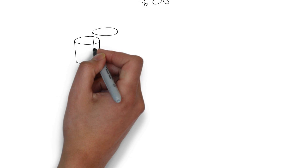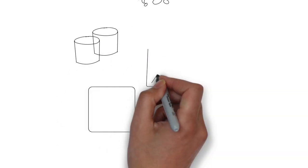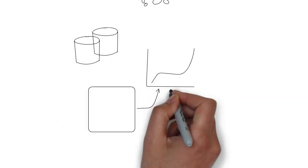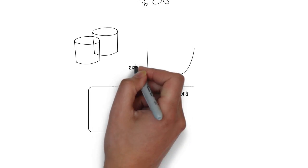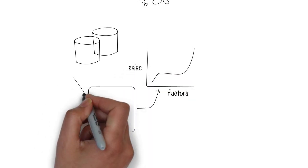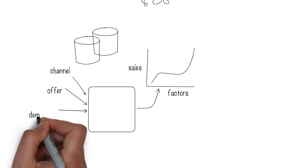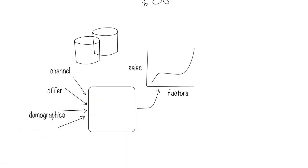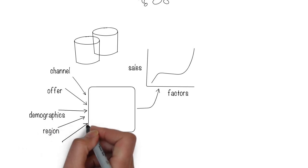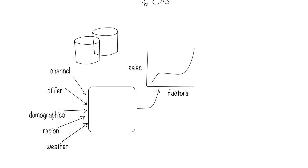There are three things needed for machine learning to work. First is data. If you want to understand which factors influence sales, you need to have collected data about it. Data like advertising channel that you use, the offers you make, the demographics you sell to, the region you're selling in, the weather, etc. You also have data about the increase in sales based on real, executed campaigns.